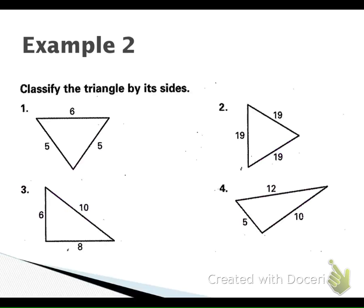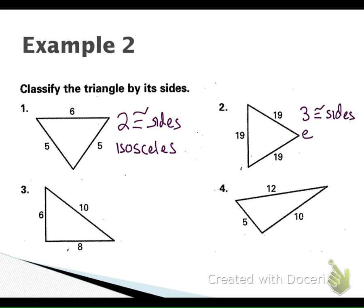We're going to classify these by sides. In picture one, how many congruent sides do we have? Two congruent sides — isosceles. Number two, how many congruent sides? Three congruent sides — equilateral. Number three, how many congruent sides? None — scalene.